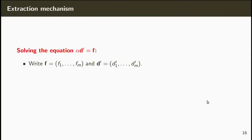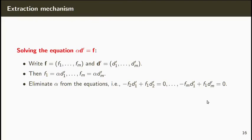Let's see how we can solve this equation. Let's write F as F1 to Fm and the vector D' as D'1 to D'M. Then, we can construct the following system of equations where each FI is equal to alpha times D'I. Now, we can eliminate alpha from the equations and obtain the system of equations where each equation is of the form minus FI times D'1 plus F1 times D'I equal to 0. We can see that it's enough to find the first coordinate D'1 in order to obtain all the other ones.